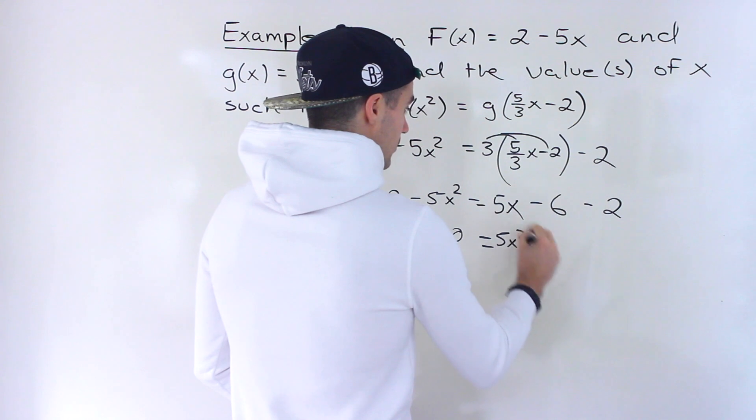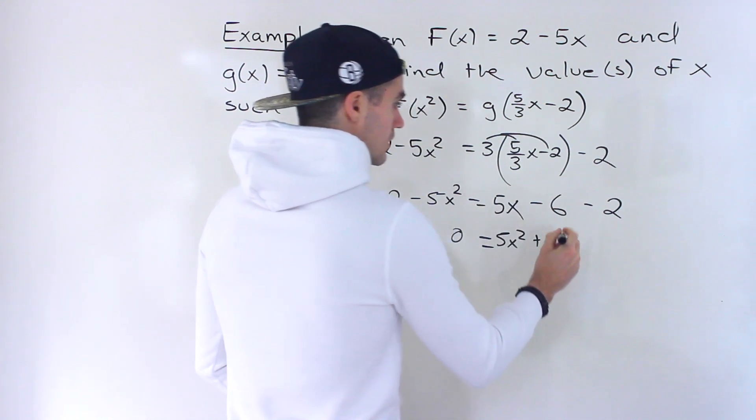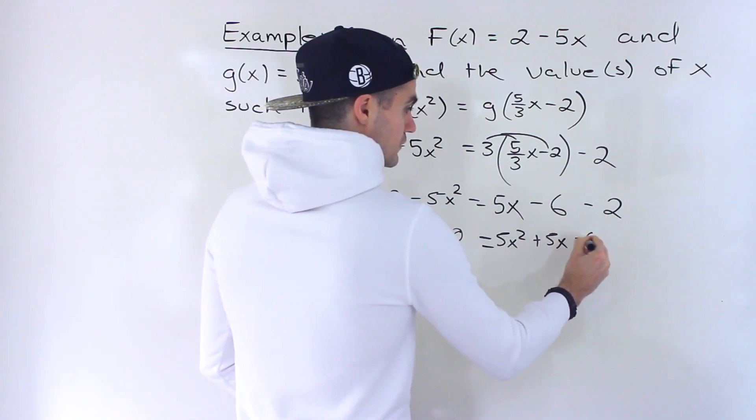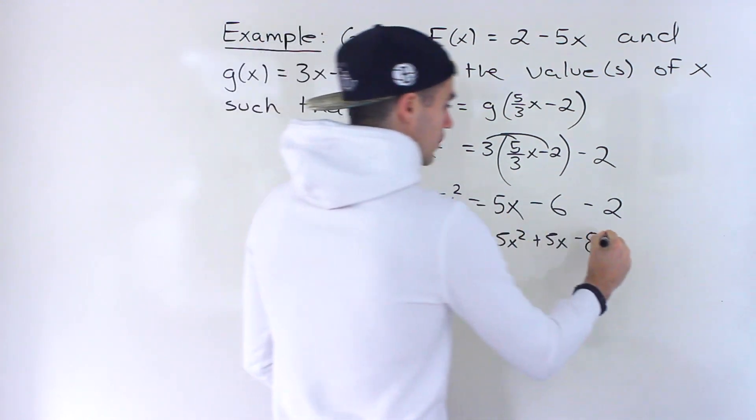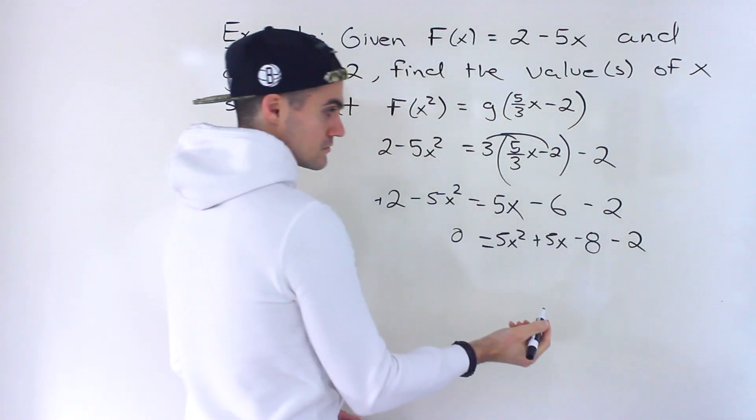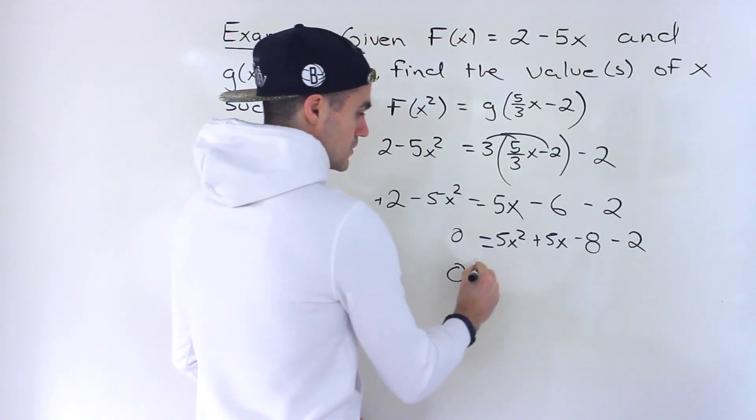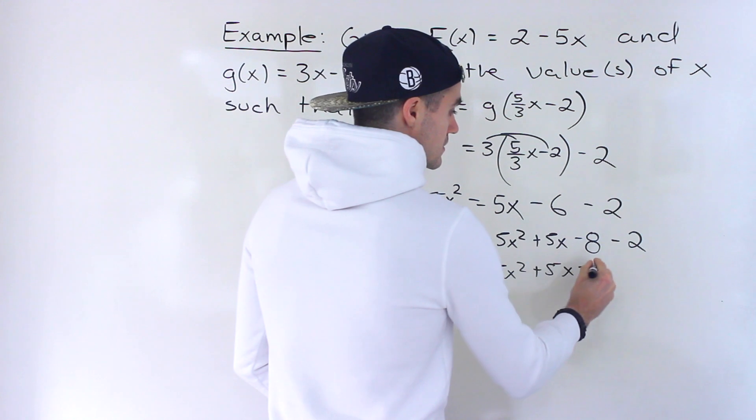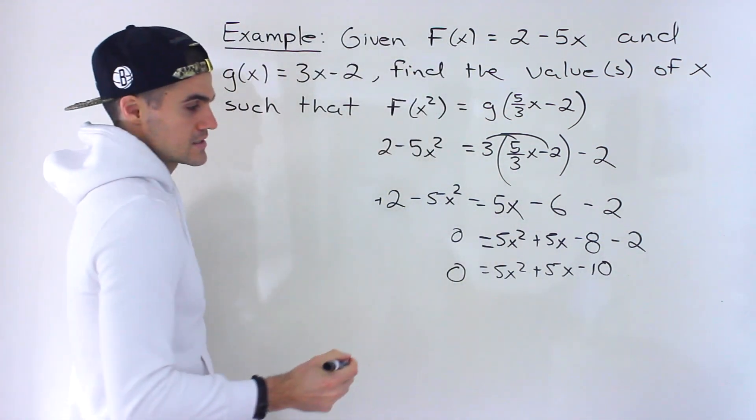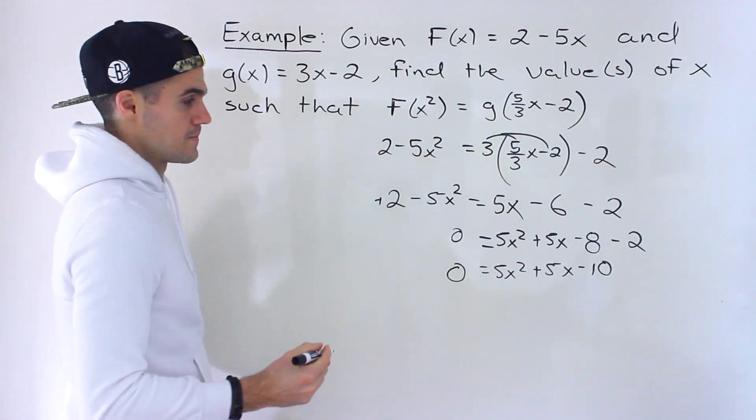We would still have the plus 5x over here. And then these 2 simplify to minus 8. And then this positive 2 will bring over—it would become minus 2 like that. So we'd end up with 5x squared plus 5x minus 10 after we simplify everything.